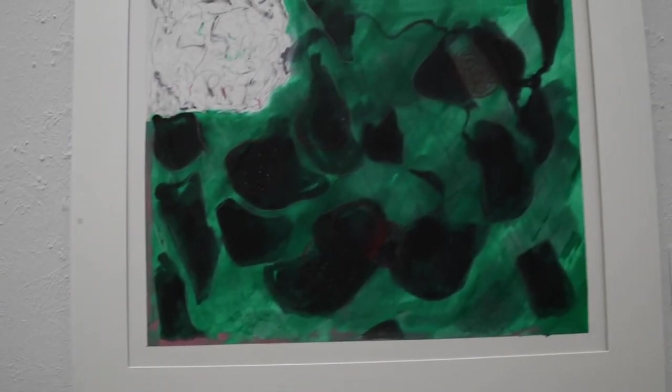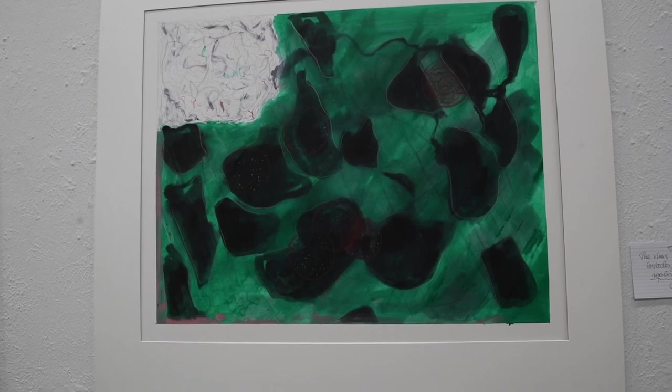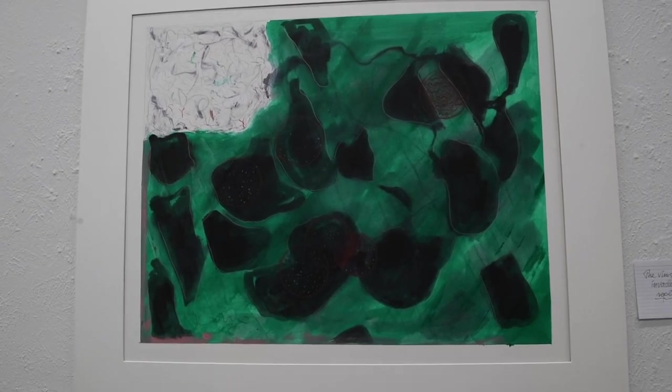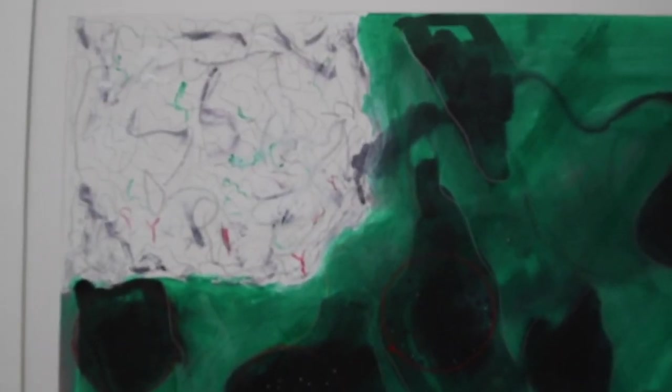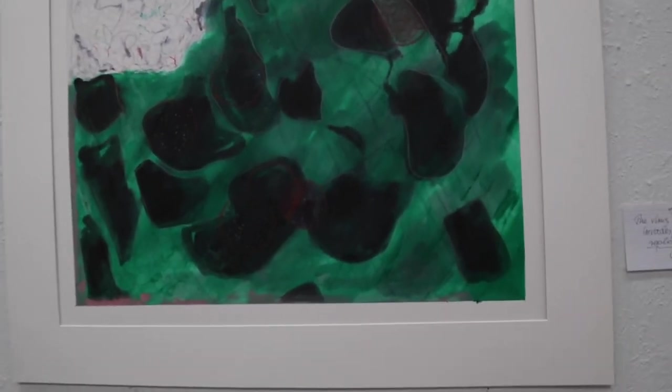And this here shows you what the virus does to the cells. It invades the cells, it will replicate, it will break out of the cells and infect other cells. And so that is the level of disease on a cellular or tissue level.